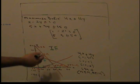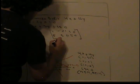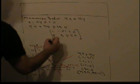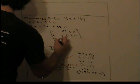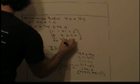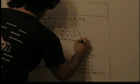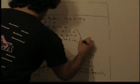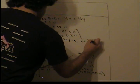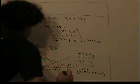We row reduce this matrix and find that x equals 330 over 13 and y equals 100 over 13. So this is our last corner point.